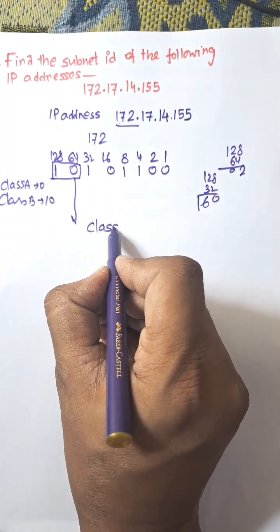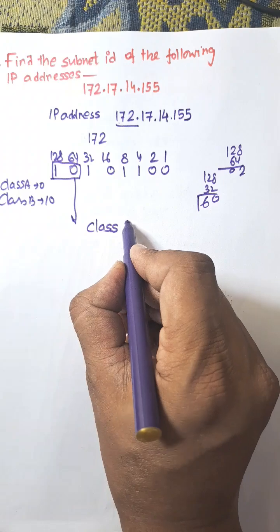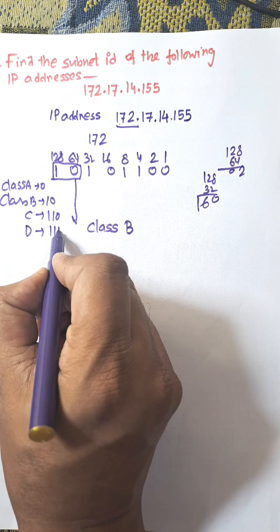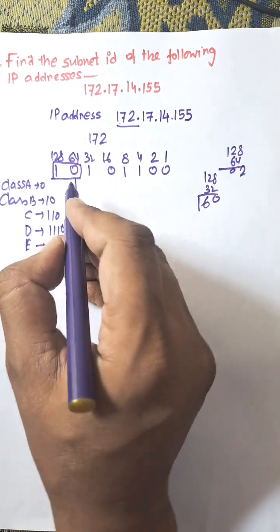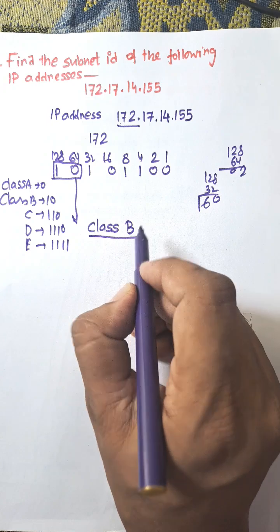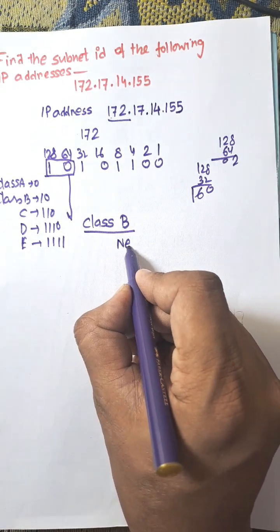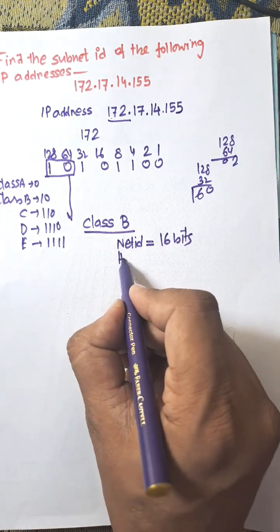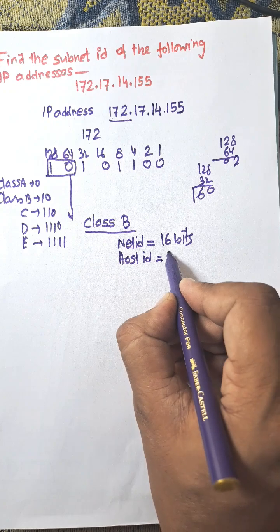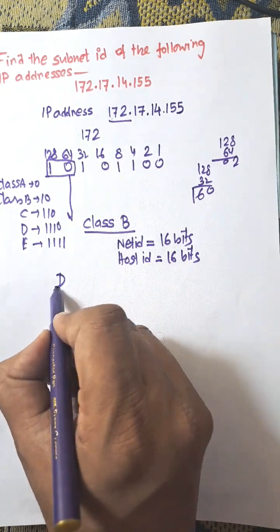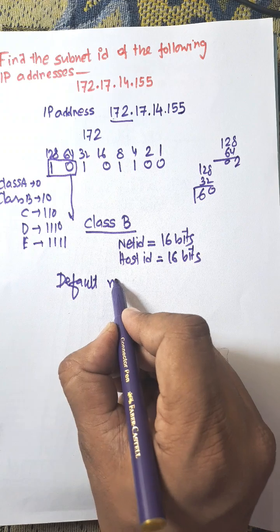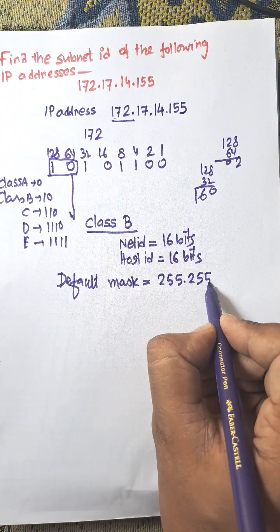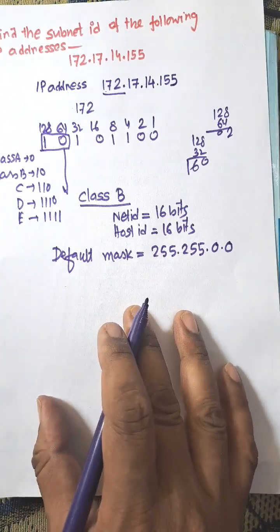First of all we need to find the class of the IP address. It is a class B. For class C it is 110 first three bit, class D it is 1110, class E 1111. Here we have first two bit is 10 so it is a class B. And for class B we know the net ID bit is a 16 bit and host ID bit is 16 bits. And default mask, the default mask is 255.255.0.0. This is the default mask.